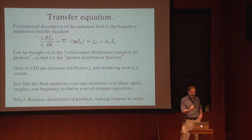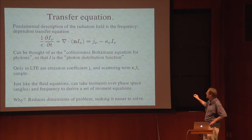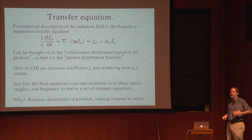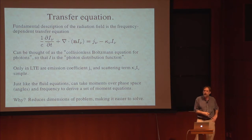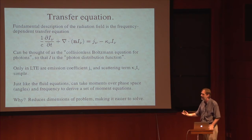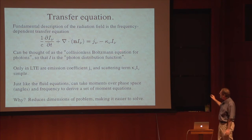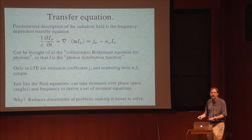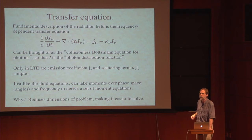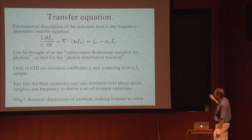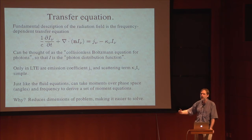The basic system of equations are the fluid equations plus the radiative transfer equation — the fundamental description of the radiation field. The frequency-dependent transfer equation: I_nu here is the specific intensity along every direction, at every point and every frequency, giving the full description of the radiation field. This equation can be thought of as a collisionless Boltzmann equation for the photons — I is really the distribution function of the photons, exactly analogous to the distribution function F for particles in a plasma. There are two approaches: solving this equation directly, or taking its moments over angles to derive a set of moment equations.